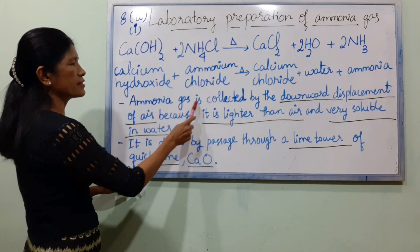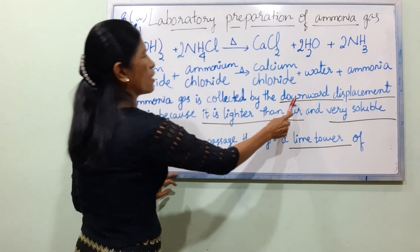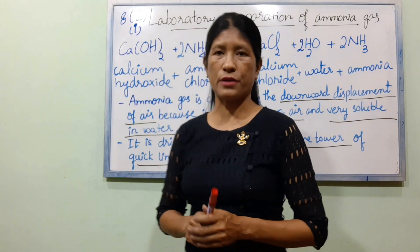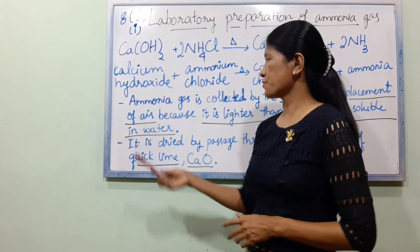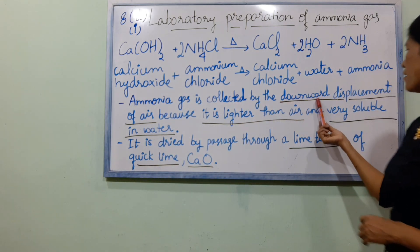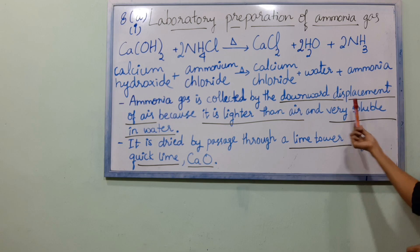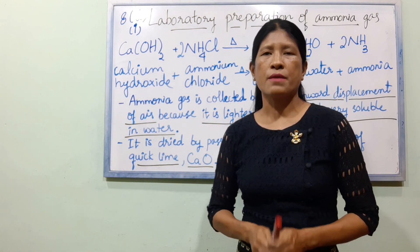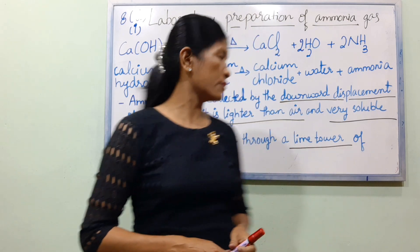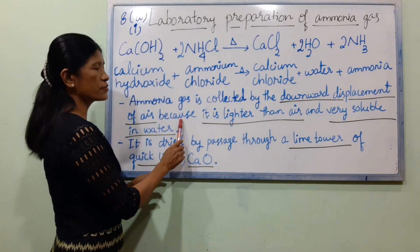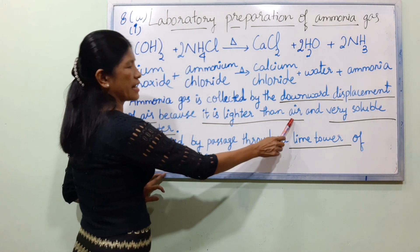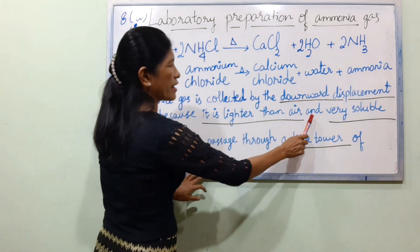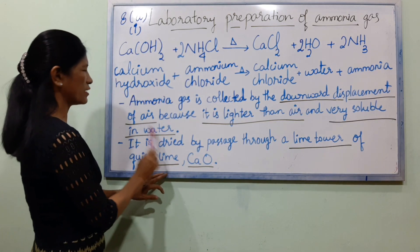Ammonia gas is collected by the downward displacement of air. Ammonia is collected by the downward displacement of air. Ammonia is very soluble in water.